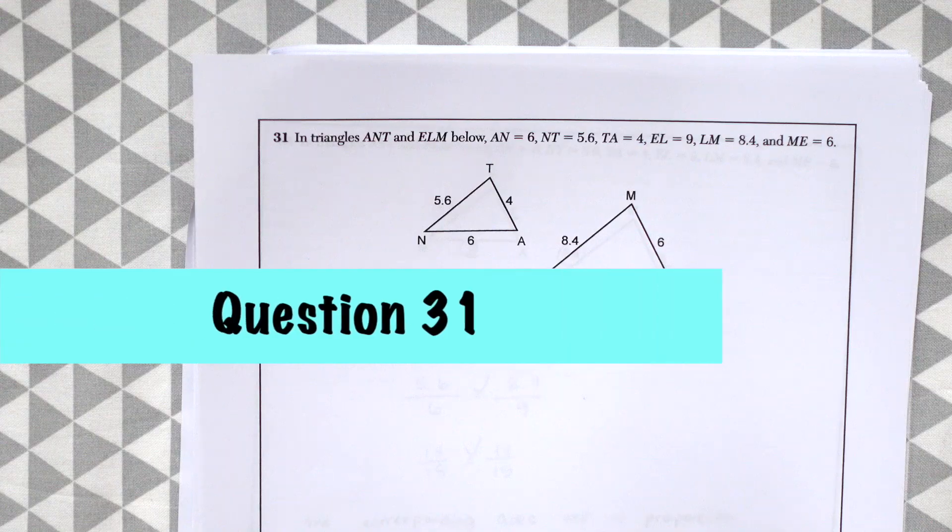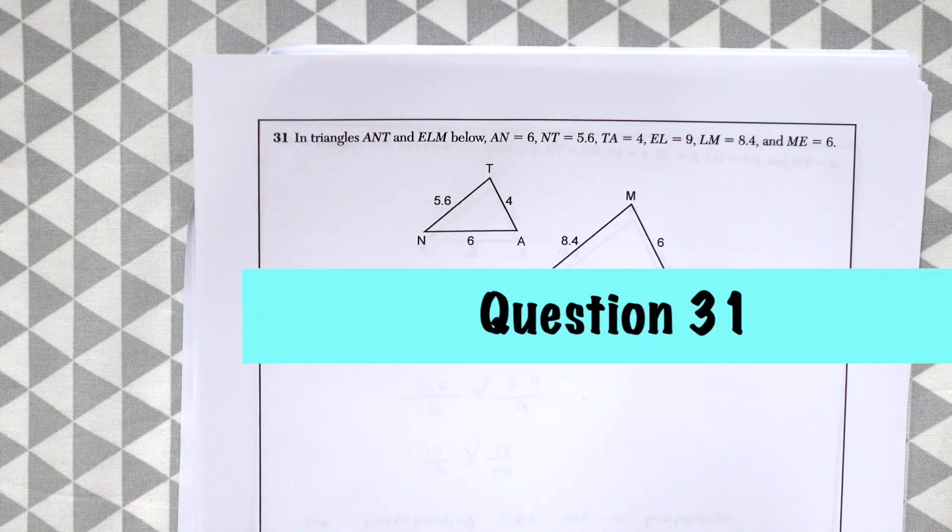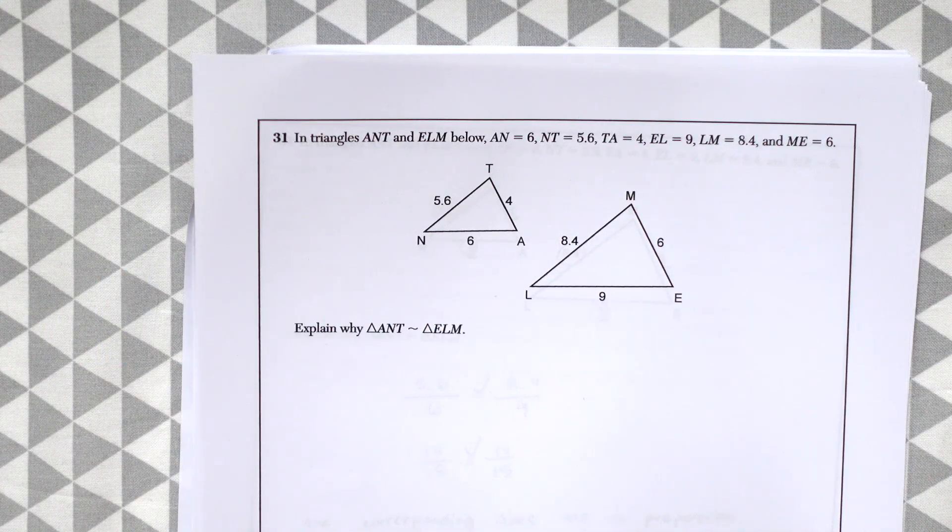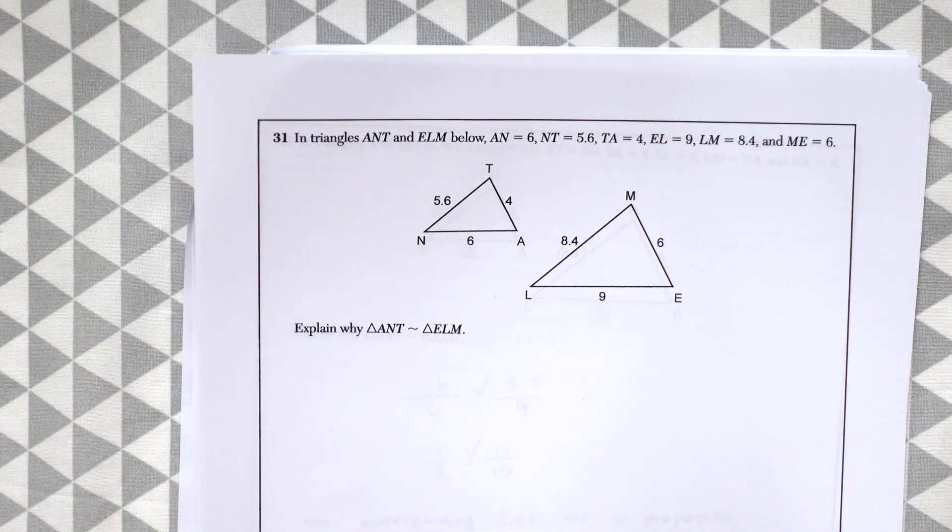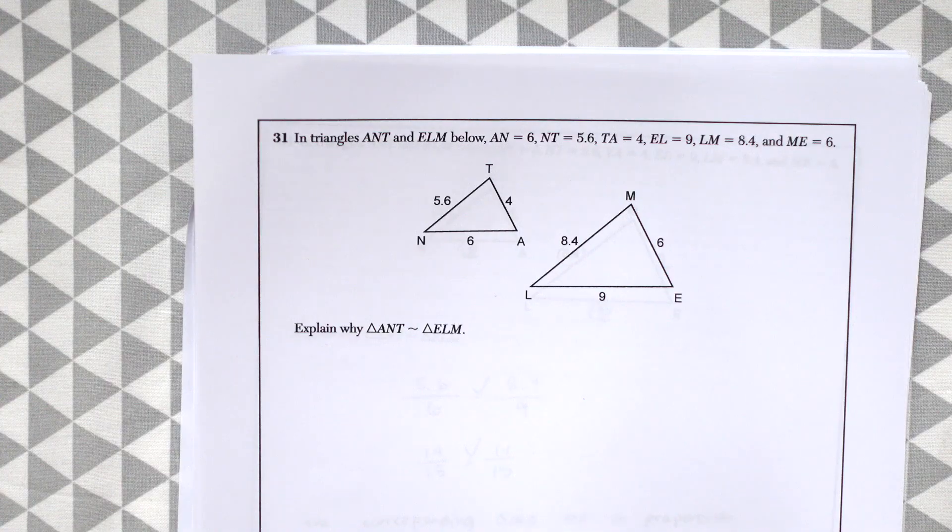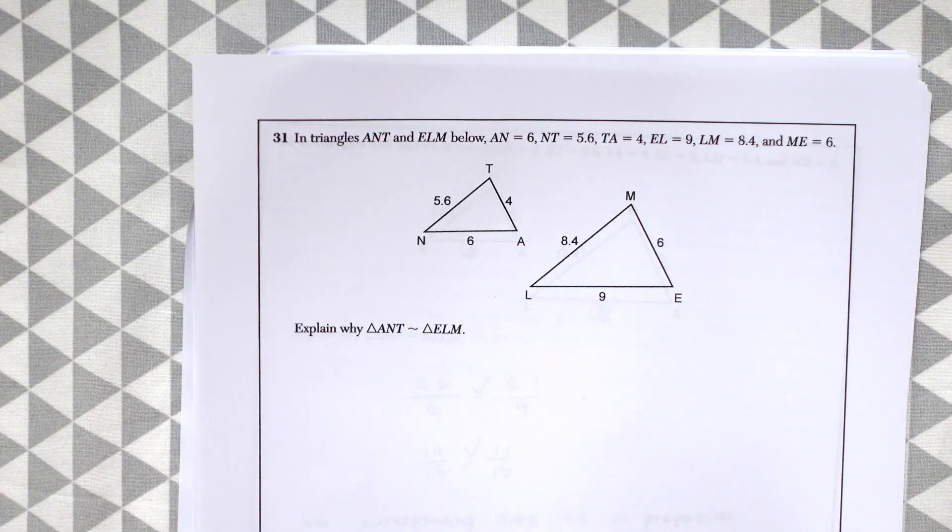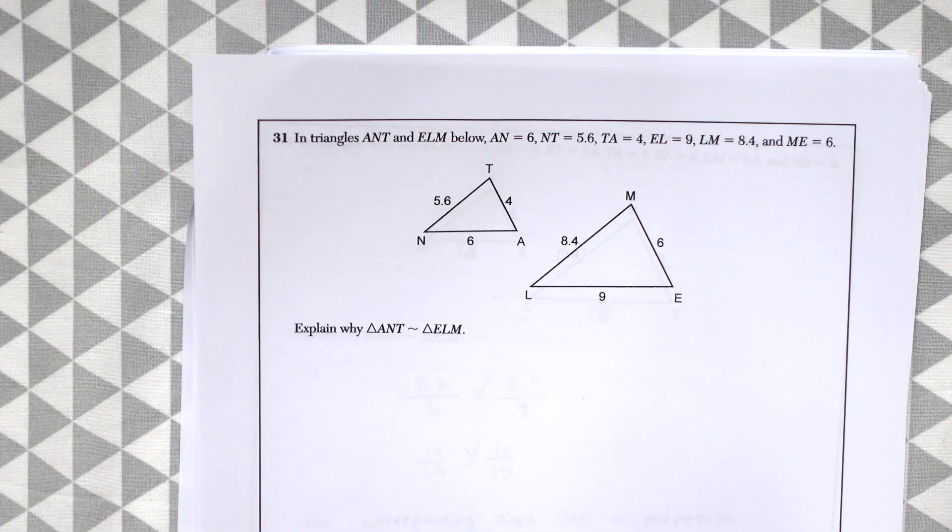Question 31. In triangles ANT and ELM below, AN equals 6, NT is 5.6, TA is 4, EL is 9, and LM is 8.4, and ME is 6. Explain why triangle ANT is similar to triangle ELM.